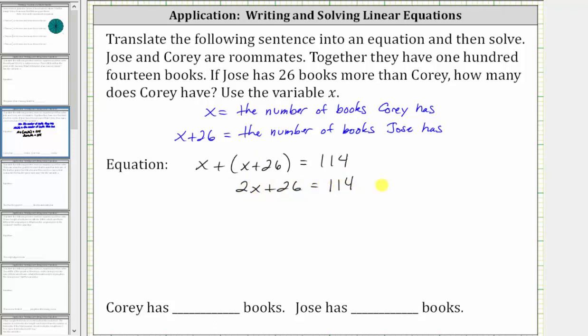The next step is to add or subtract to isolate the variable term. To undo the plus 26, we subtract 26 on both sides. Simplifying on the left, 26 minus 26 equals zero, which is why we subtracted 26 on both sides.